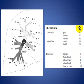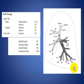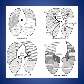In the right lung, the upper lobe has three segments: apical, anterior, and posterior. The middle lobe has two segments: lateral and medial. The lower lobe has five segments: superior, medial, anterior, lateral, and posterior. In the left lung, the upper lobe has the apical-posterior segment, anterior segment, and lingula with superior and inferior segments. The lower lobe has four segments: medial, anterior, lateral, and posterior.